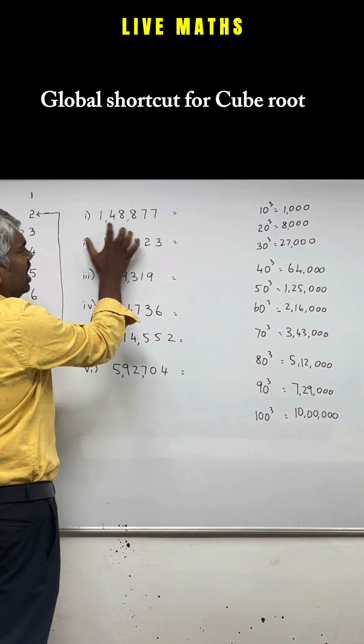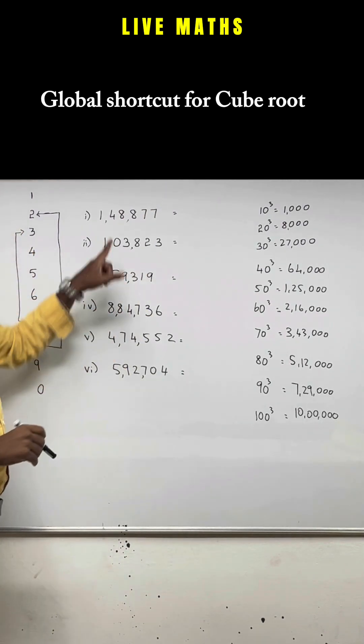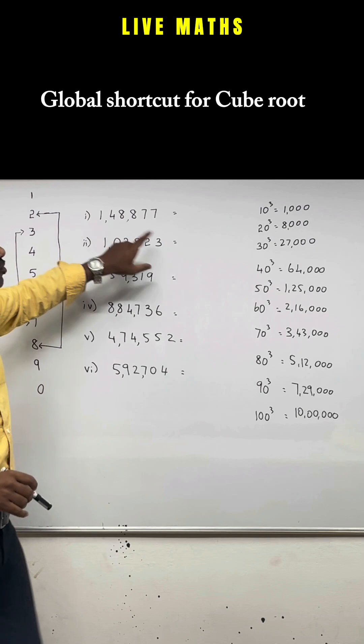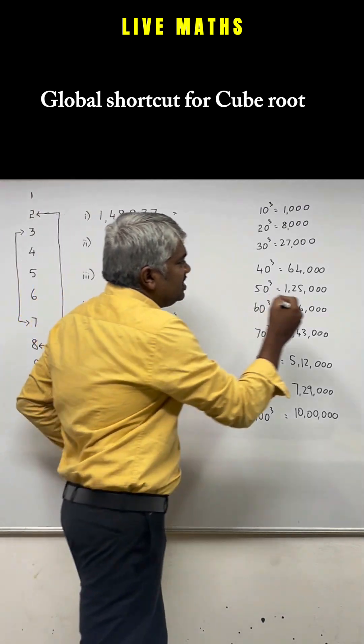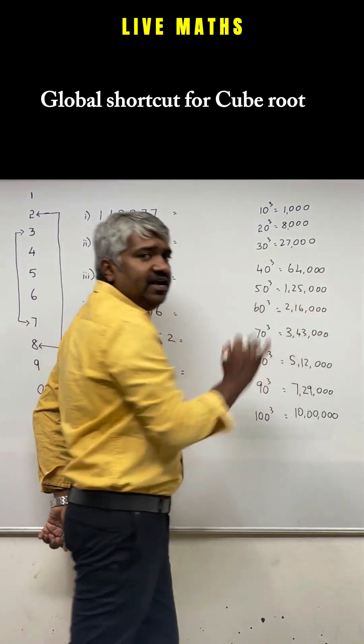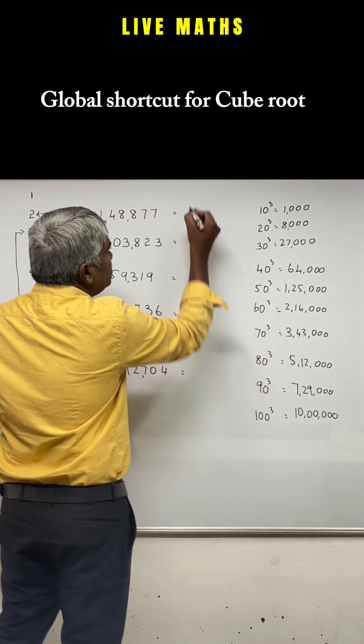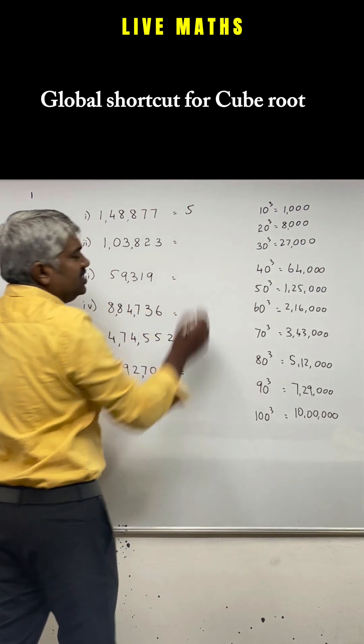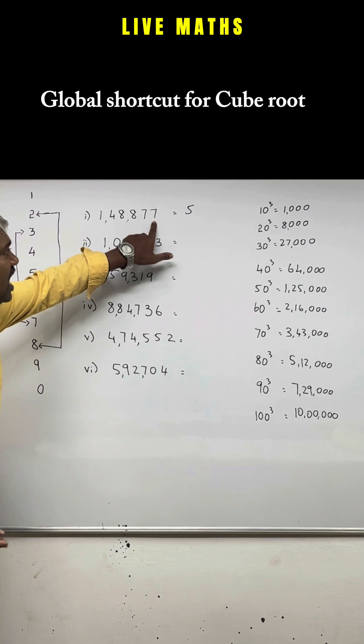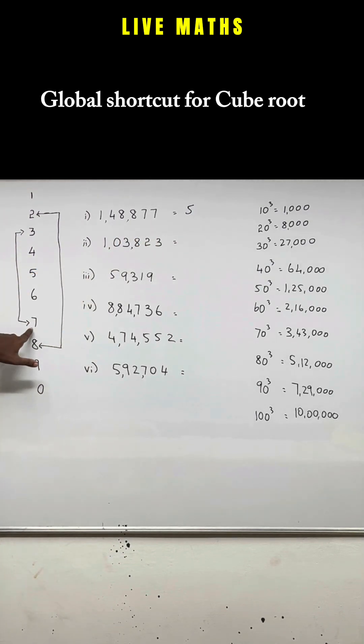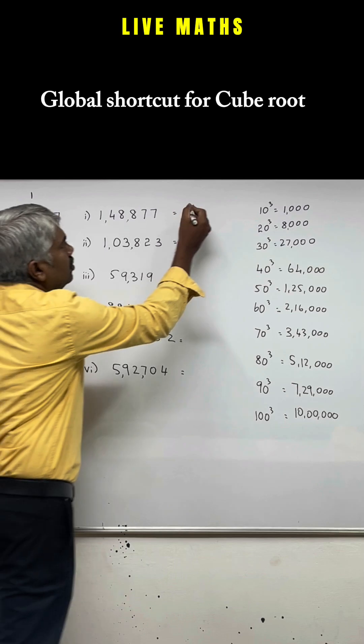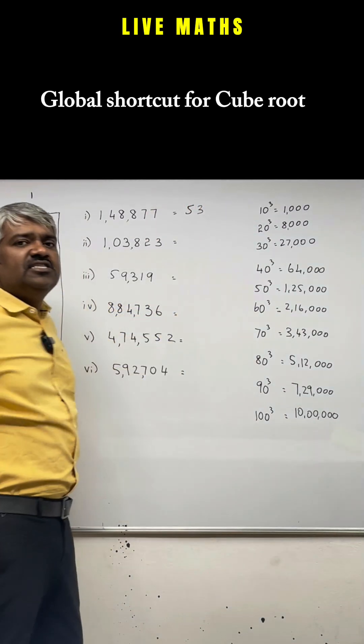See, the number is 1,48,877. Where does this 1,48,000 lie in this table? It lies between 1,25,000 and 2,16,000. So which number comes between 50 to 60, which has to be in 50s. Now, look into the last number 7. Is 7 connected to any number? Yes, it is connected to 3. So write 3. Your answer is 53.